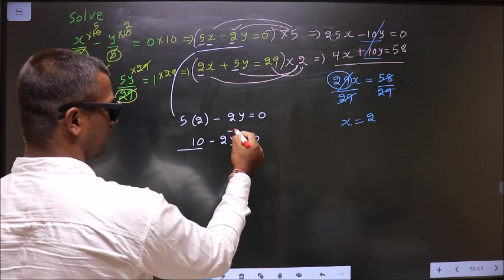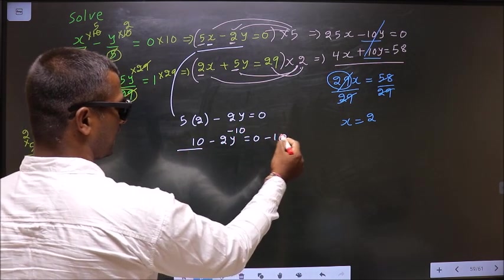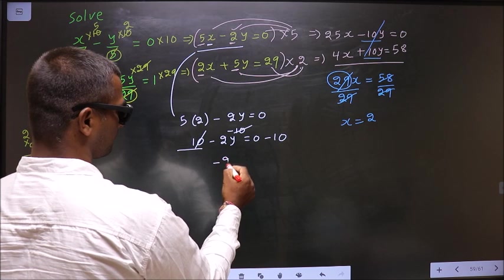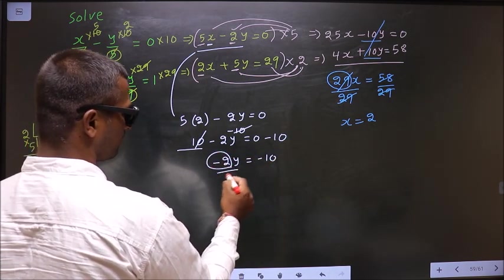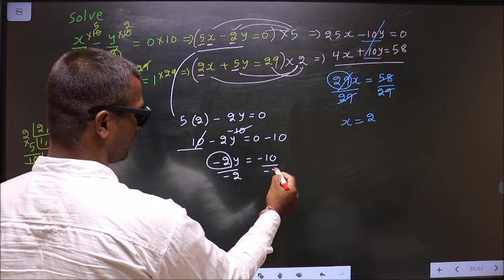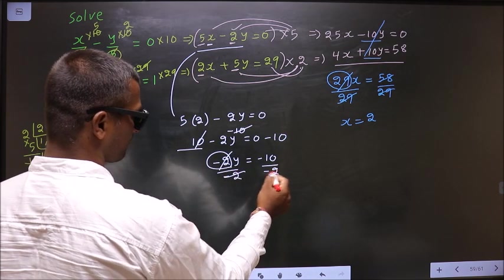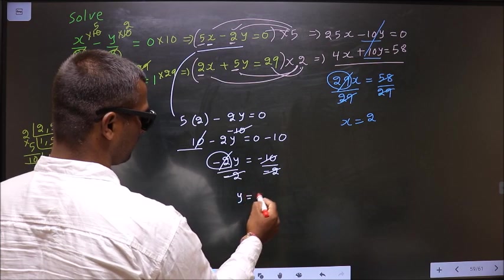For that, subtract 10 on both sides. So minus 2y equal to minus 10. So now to get y, I should remove minus 2. So divide by minus 2. So I get y equal to 5.